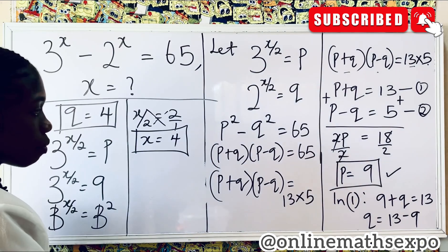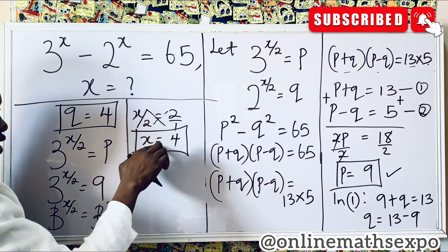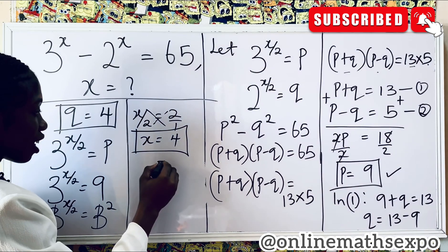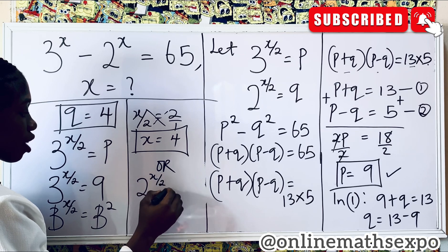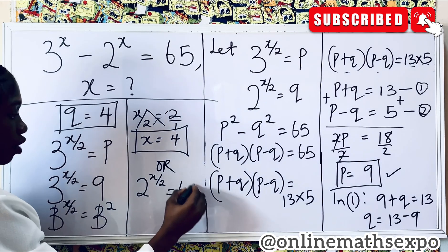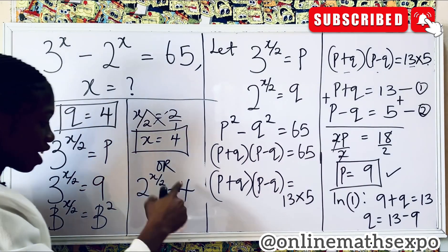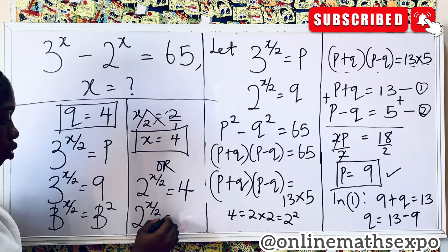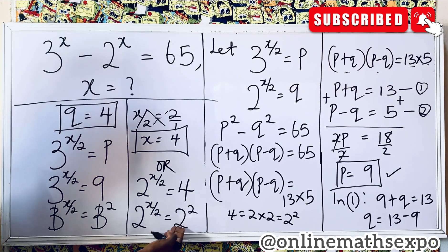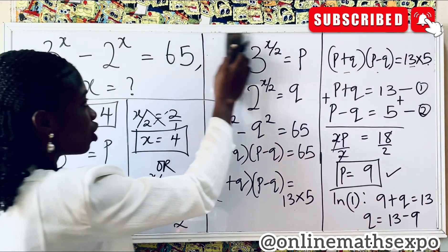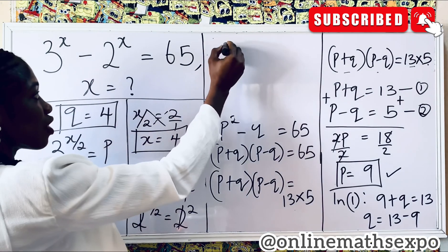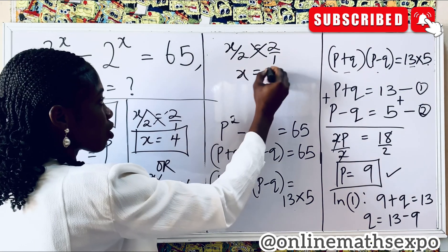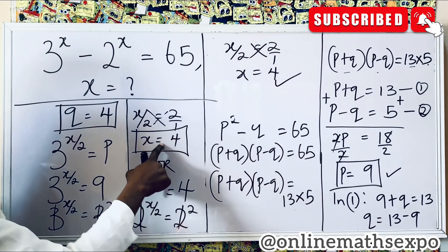We can verify using q: 2 to the power of x over 2 equals q, which is 4. Express 4 as a power of 2: 4 equals 2 times 2, which is 2 squared. So 2 to the power of x over 2 equals 2 to the power of 2. Equating exponents: x over 2 equals 2, so cross-multiplying gives x equals 4. The same answer is confirmed.